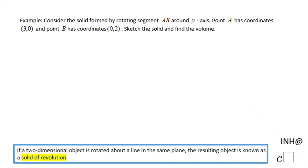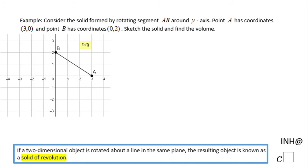Welcome back to INH at C squared. In this example, we want to rotate segment AB around the y-axis. Point A has coordinates (3, 0) and point B has coordinates (0, 2). So let's see, that segment is right here, and we're going to rotate around the y-axis.